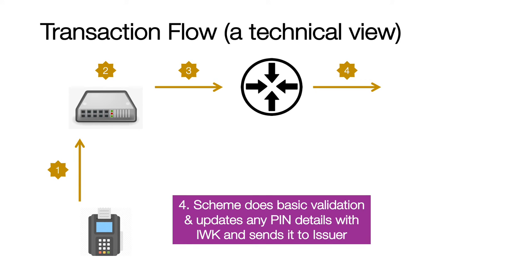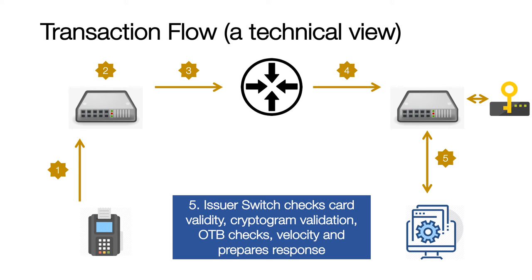The scheme does some basic validation on the message and converts any PIN received from the acquired working key format into an issuer working key format that it agreed with the issuer. It then forwards the transaction to the issuing switch. Once the issuer switch receives the message, it checks if the card is valid — also called card authentication. If you're using an EMV chip, there are data elements that the switch receives to confirm the card is legitimate. It also checks if the customer is valid, called cardholder verification methods. When you enter a PIN, it confirms the PIN is valid, which confirms the cardholder is legitimate.